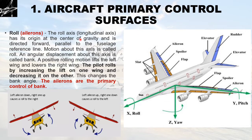Aircraft primary control surfaces — roll, governed by ailerons. The roll axis, or longitudinal axis, has its origin at the center of gravity and is directed forward, parallel to the fuselage reference line. Motion about this axis is called roll; an angular displacement about this axis is called bank. A positive rolling motion lifts the left wing and lowers the right wing. The pilot rolls by increasing lift on one wing and decreasing it on the other, changing the bank angle. The ailerons are the primary control of bank.